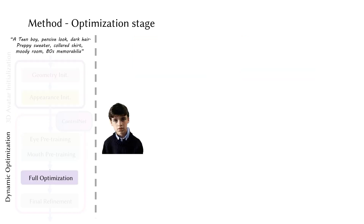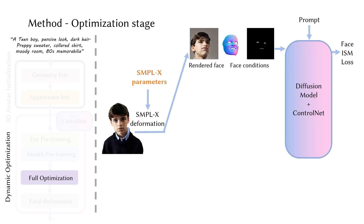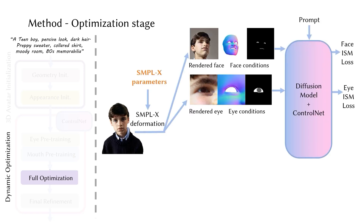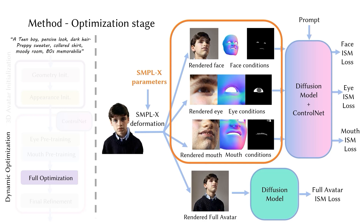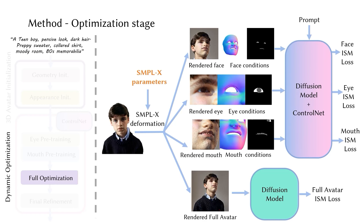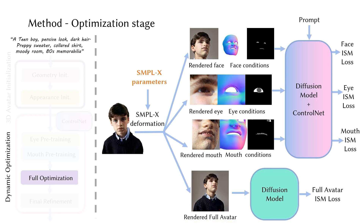We then proceed to the full optimization pipeline, where we parallelly optimize the face region, eye region, mouth region, and the full avatar using interval score matching. Since the face, eye, and mouth regions are significantly affected by expression changes, we incorporate guidance from the ControlNet during their optimization. For optimizing the full rendering of the avatar, we omit the ControlNet and rely solely on the diffusion model with ISM.